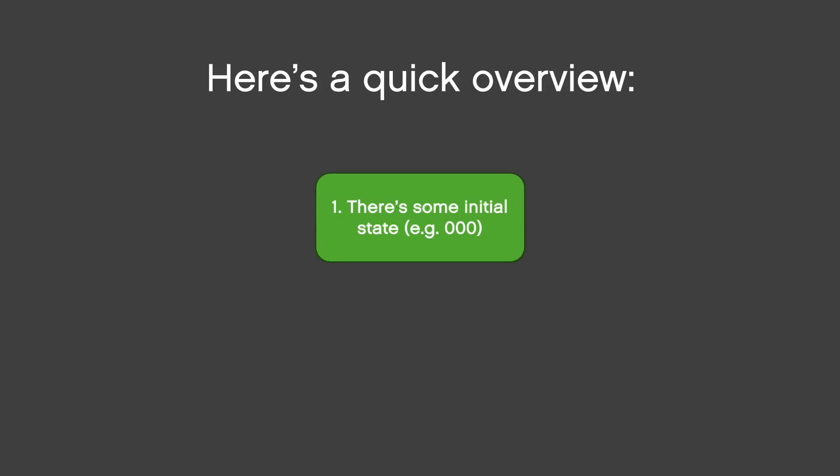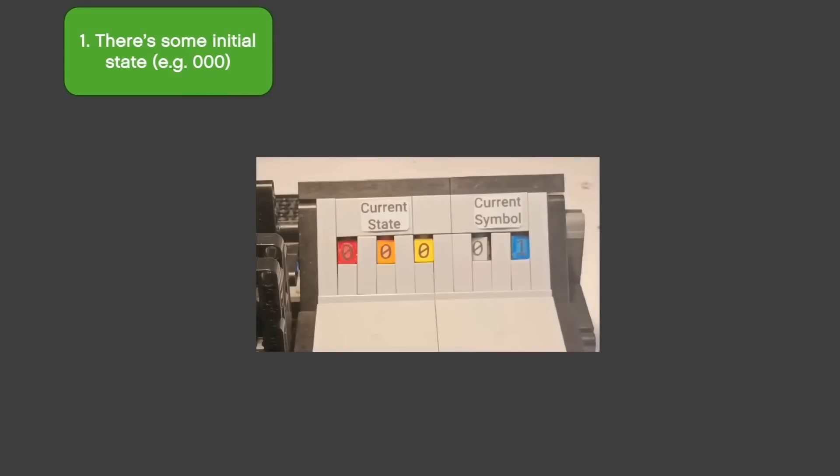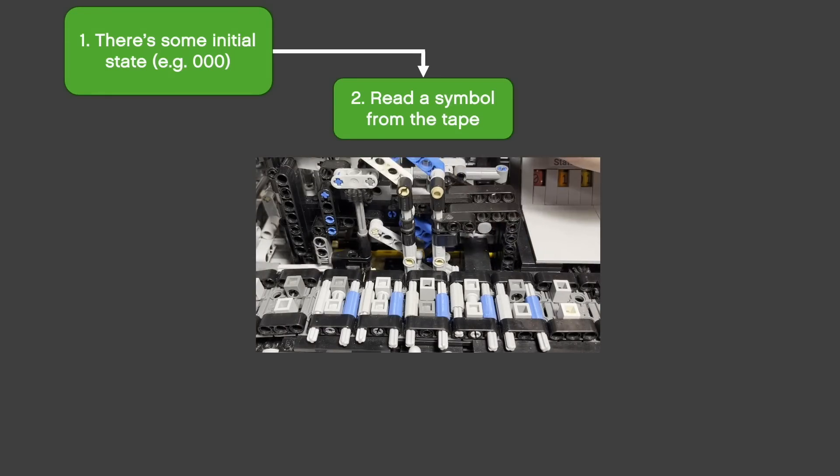First, the machine does stuff based on the symbol it has read and the state it has in some registers inside. The state is a variable and at the beginning of the program, it needs to have some initial value, say 0 0 0. Then, the machine is ready to read the symbol from the tape.